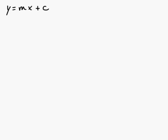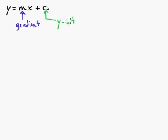What does everything mean? Well, anytime you see the m — the number in front of the x — that is the gradient. And anytime you see the c, that's the y-intercept. This is a great formula because from it you can not only graph lines very easily, but you can write equations of lines very easily as well.